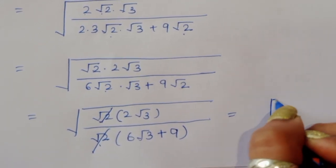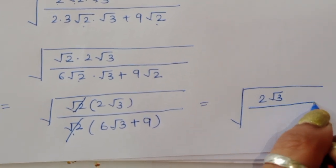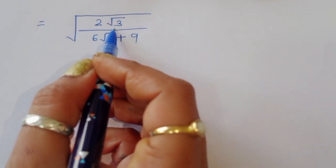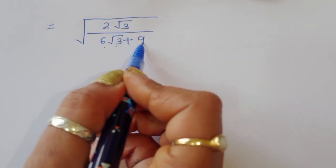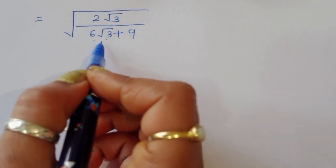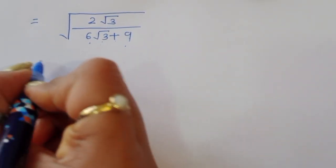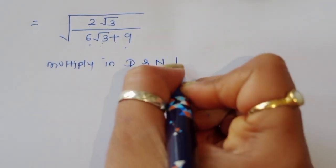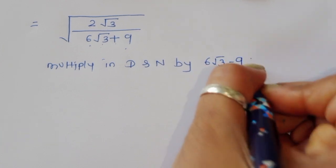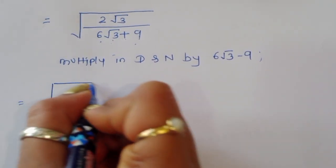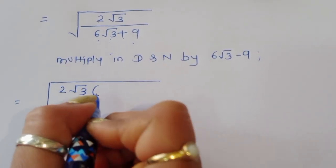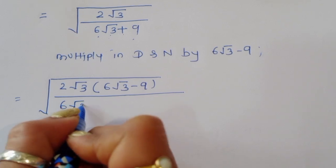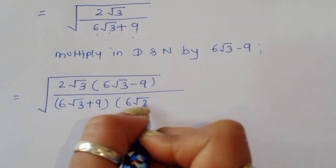Now we have to rationalize this denominator. We multiply numerator and denominator by 6 square root of 3 minus 9. So we get 2 square root of 3 times the quantity 6 square root of 3 minus 9, divided by the quantity 6 square root of 3 plus 9 times the quantity 6 square root of 3 minus 9.